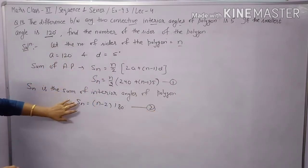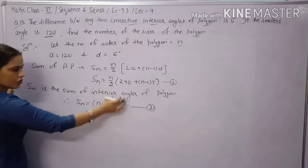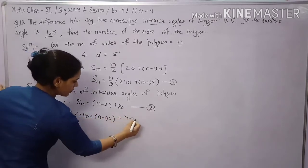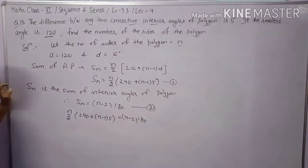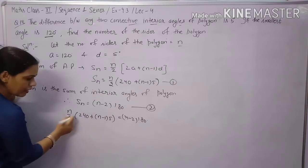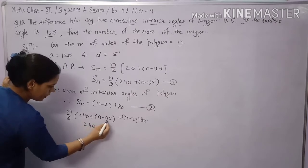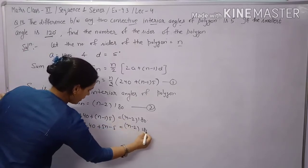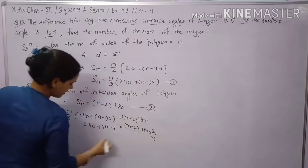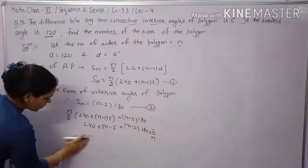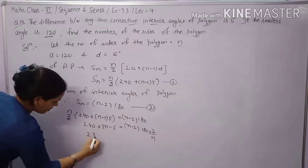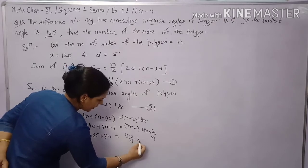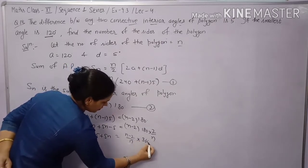Since the left-hand sides of both equations are equal, equate the right-hand sides: N/2 · (240 + (N-1)·5) = (N-2)·180. Simplifying: 240 + 5N - 5 = (N-2)·360/N, giving 235 + 5N = 360 - 720/N. Multiplying through by N: 5N² + 235N = 360N - 720.